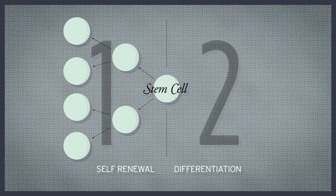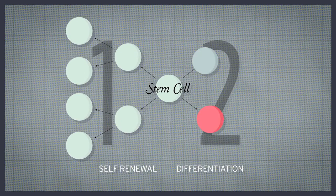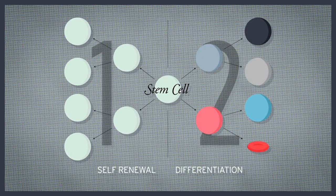Second, it must be able to differentiate. In other words, it must be able to divide and give rise to specialized cells.